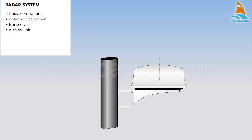Radar signals travel along the line of sight. Therefore, the detection of targets depends on the height of the radar scanner and the height of the target.